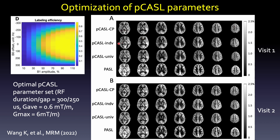And on top of that, you can use PTX pulse — PTX B1 shimming — to push up signal by 10%. And if you don't want to do individual calibration, you can use average B1 shimming, which we call universal shimming, to improve the signal slightly by 5%. Overall, all three conditions perform really well for PASL with good test-retest reliability. The bottom row shows PASL images acquired using the WURST pulse.